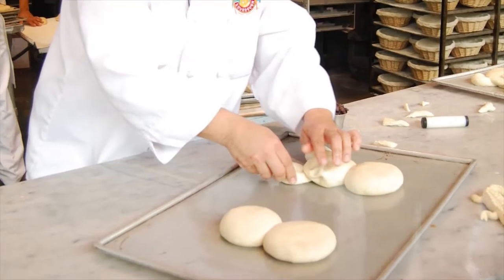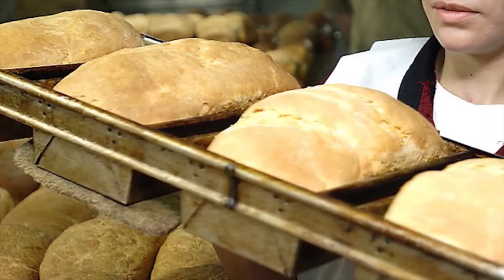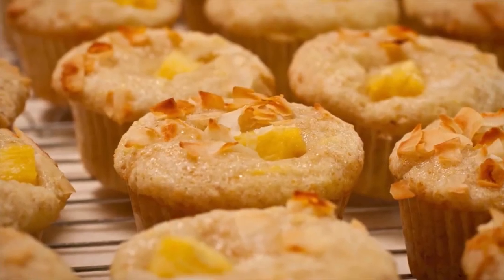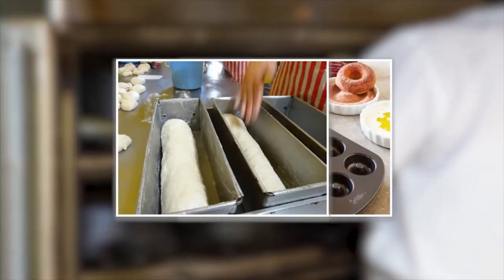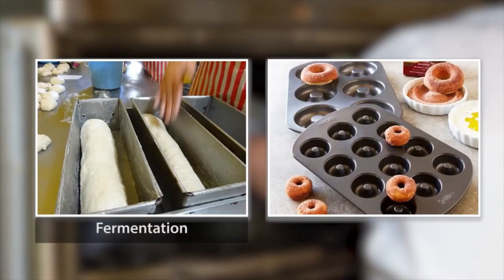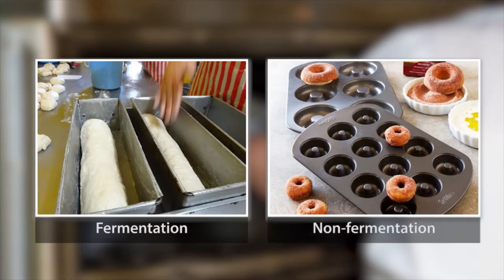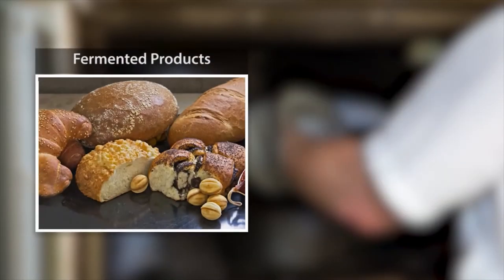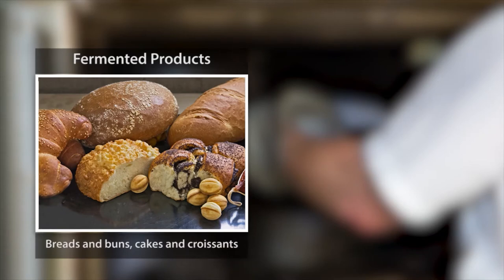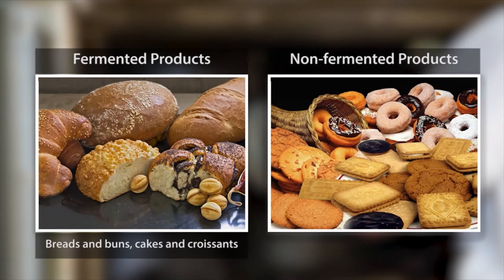A bakery is an establishment that prepares baked food products. They are produced using two methods: fermentation and non-fermentation. These products are further classified by the process of production. Under fermented products: breads and buns, cakes, and croissants. Non-fermented products include cookies, biscuits, and crackers.